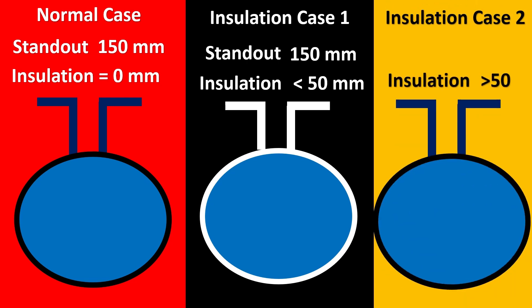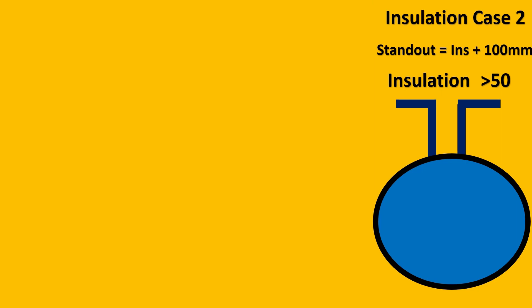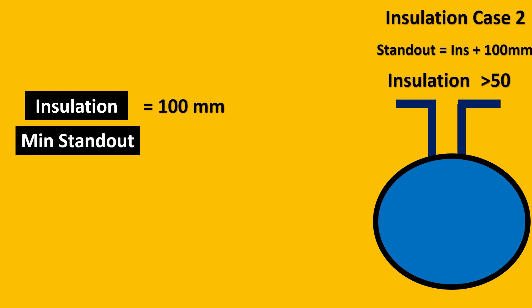But in insulation case 2, the insulation is actually greater than 50 mm. Here your standout has to be the insulation length plus 100 mm of clearance. This has to be your minimum standout. Let us calculate one case. So for example, your insulation is 100 mm and your minimum standout then has to be 100 mm which was the insulation plus 100 mm clearance. So minimum standout should at least be 200 mm.